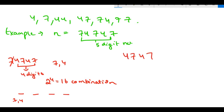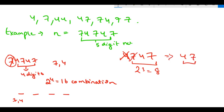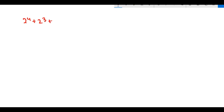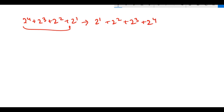After removing the first 7, let's remove the next digit 4. We're left with three digits, giving us 2 raised to power 3, which is 8 combinations. Then removing another digit gives 2 raised to power 2 which is 4, and then just one digit left contributing 2 raised to power 1 which is 2. So what we had was: 2 raised to power 4 plus 2 raised to power 3 plus 2 raised to power 2 plus 2 raised to power 1.